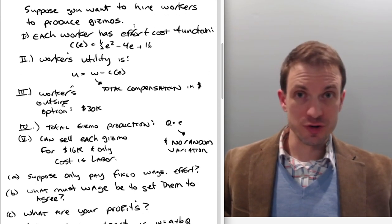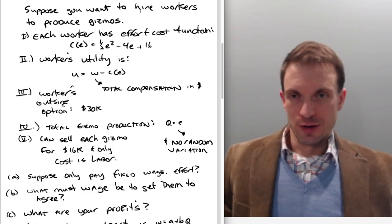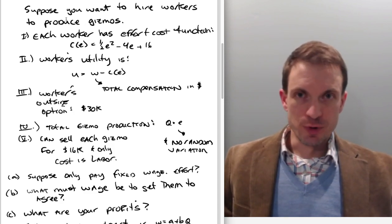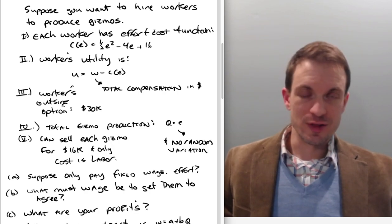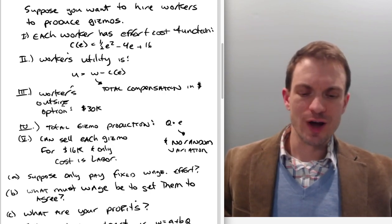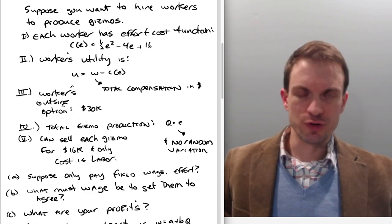Alright, so for our setup, suppose we have the goal of hiring workers to produce gizmos. We'll assume each worker has some effort cost function. The idea is that though the worker might enjoy the job, there's some cost associated with exerting high levels of effort.